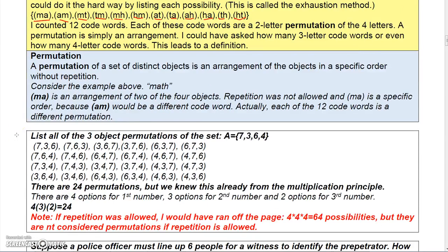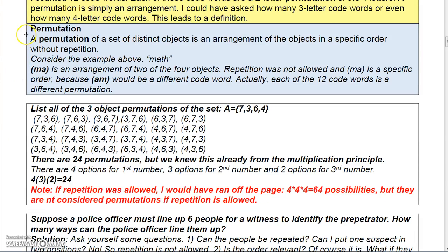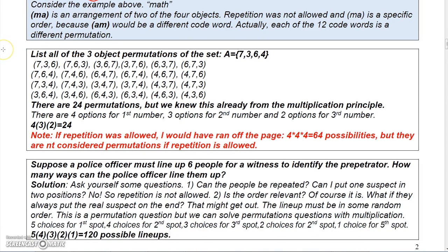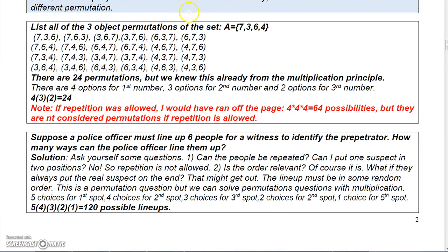Each one of those is a permutation, so there are 12 two-letter permutations of those four letters. A permutation of a set of distinct objects is an arrangement of those objects in a specific order with no repetition. In the MATH example, MA is one arrangement of two of the four objects, and AM is another arrangement of those same two letters.